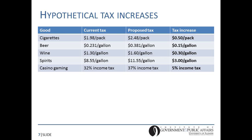The table on this slide shows the hypothetical tax increases I consider in my analysis. For cigarettes, I'm considering an increase of 50 cents per pack. For alcohol, I'm considering increases of 15 cents, 30 cents, and $3 per gallon respectively for beer, wine, and spirits — corresponding to about 1.4 cents per beer, 1.2 cents per glass of wine, and about 3.5 cents per drink for spirits. I also consider an increase in the income tax for casino gaming of 5%. Overall, these are modest but not trivial increases compared to some historical increases the state of Illinois has levied.